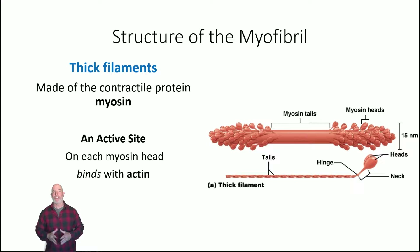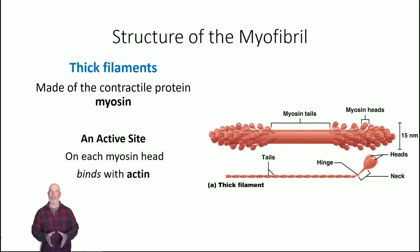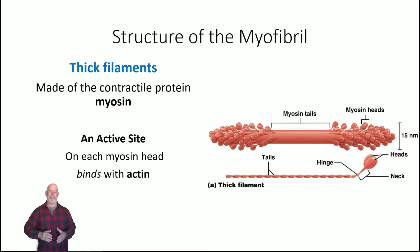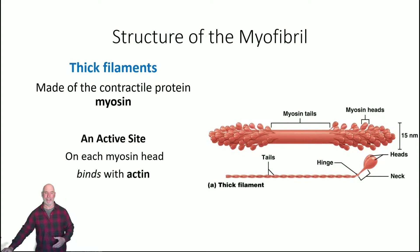The myosin head has an active site — this is very important because that active site binds to an actin filament. The hinged neck can move back and forth, and by binding to filaments and sliding past each other, we're starting to build the story of muscle contraction.